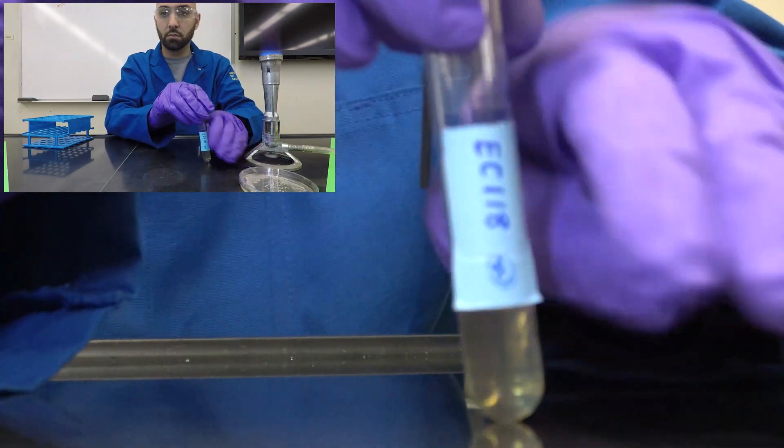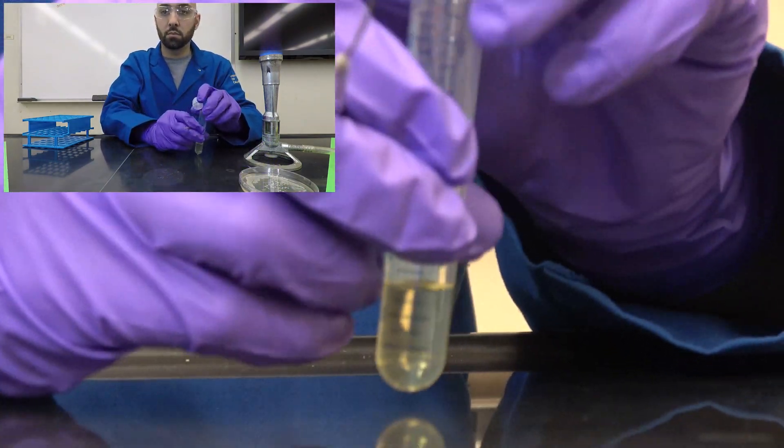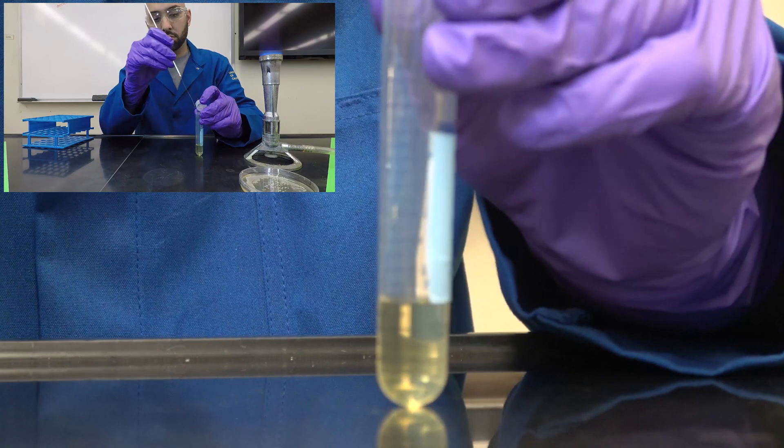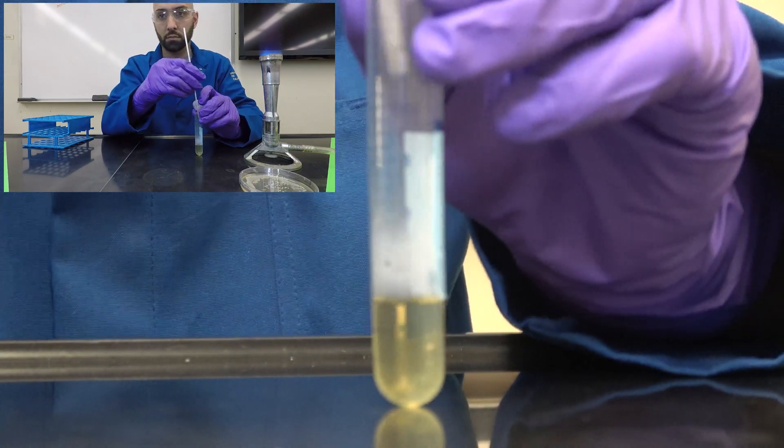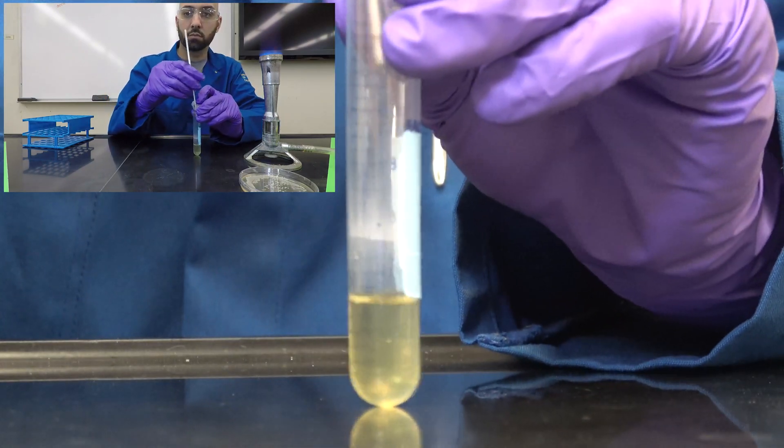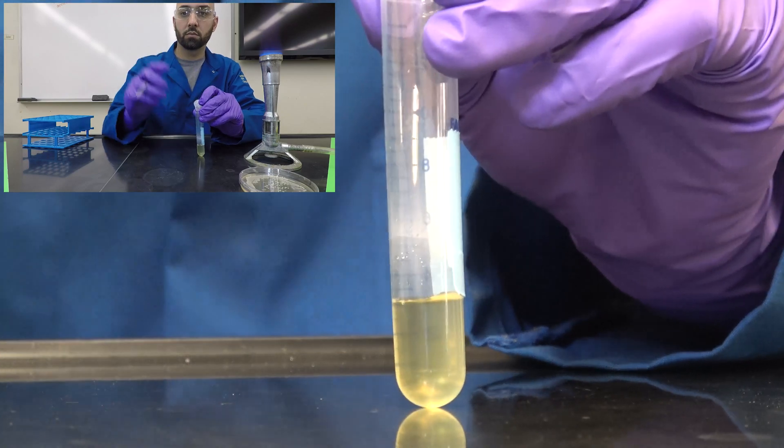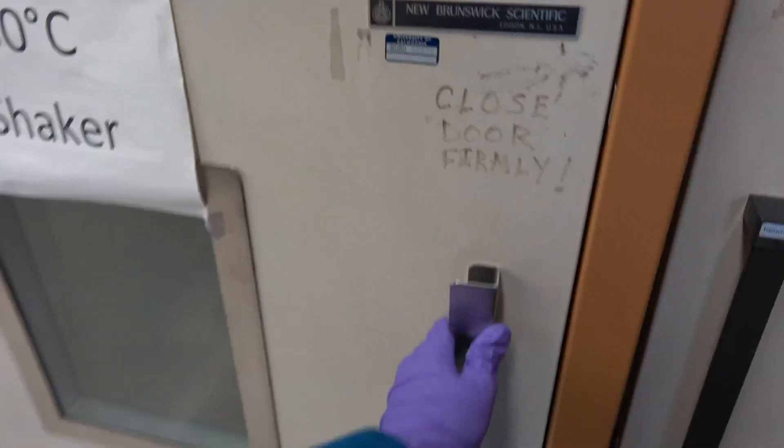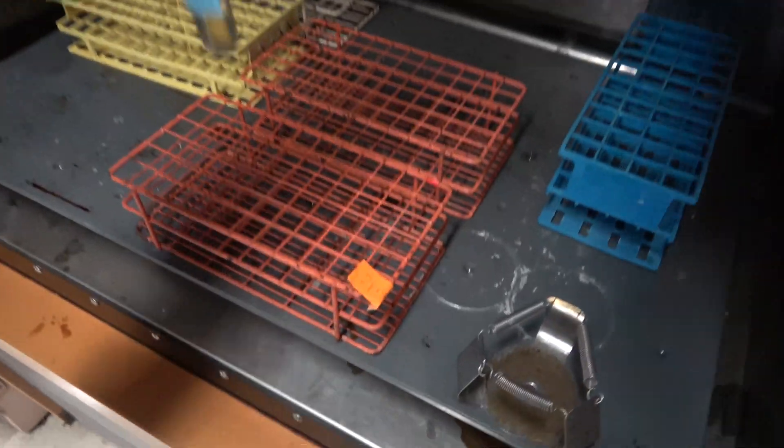We'll swirl the loop in the media to ensure proper inoculation. For optimal growth of this single cell eukaryote, we'll go into a 30 degree Celsius shaker overnight.